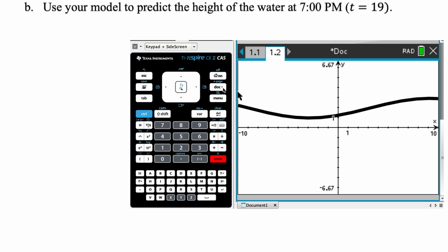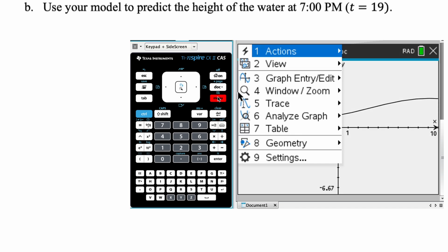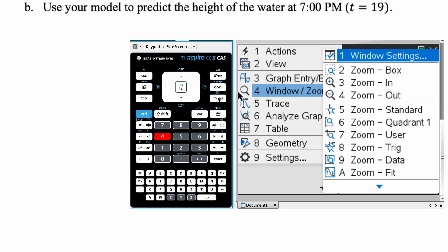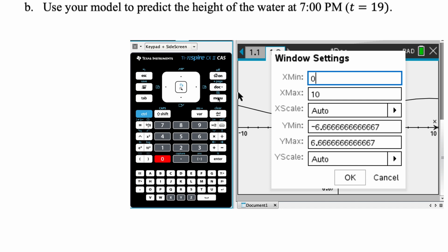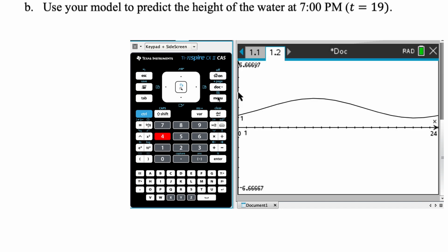And it graphs it. What I should probably do, because this is only between 0 and 24, is press menu, and then option four is window, and window settings. I'm going to change this as 0 to 24, because that's really all we need to see. So there's the graph of our regression equation.